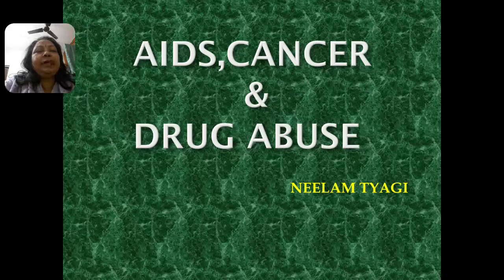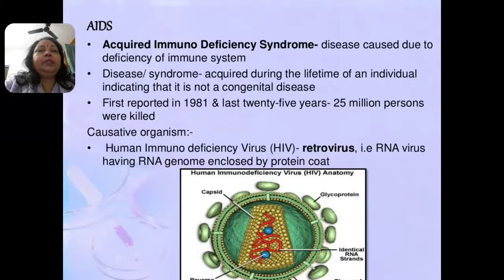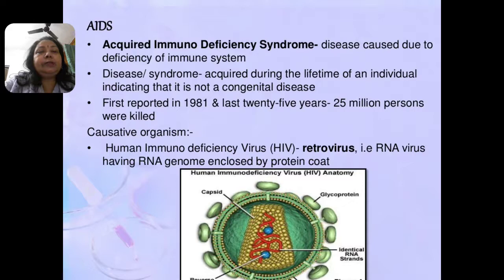Good morning class. Today's topic is AIDS, cancer, and drug abuse. The full form of AIDS is Acquired Immunodeficiency Syndrome. It is a syndromic disease caused due to deficiency of the immune system, and this syndrome is acquired during the lifetime of any individual, indicating that it is not a congenital disease. This disease was first reported in 1981 in America.